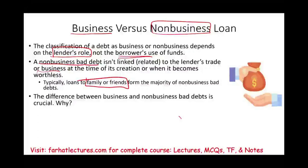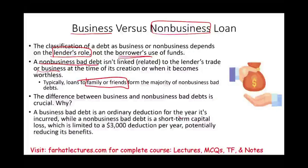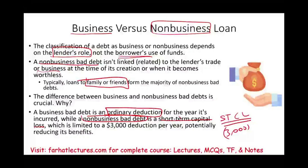The distinction between business and non-business debt is crucial from a tax perspective. A business bad debt is considered an ordinary deduction for the year it is incurred — you can deduct the full amount against ordinary income. A personal bad debt, however, is treated as a short-term capital loss, with a maximum deduction of three thousand dollars per year for individuals. So if you lend a personal loan of ten thousand dollars and lose it all, you can only deduct three thousand dollars.